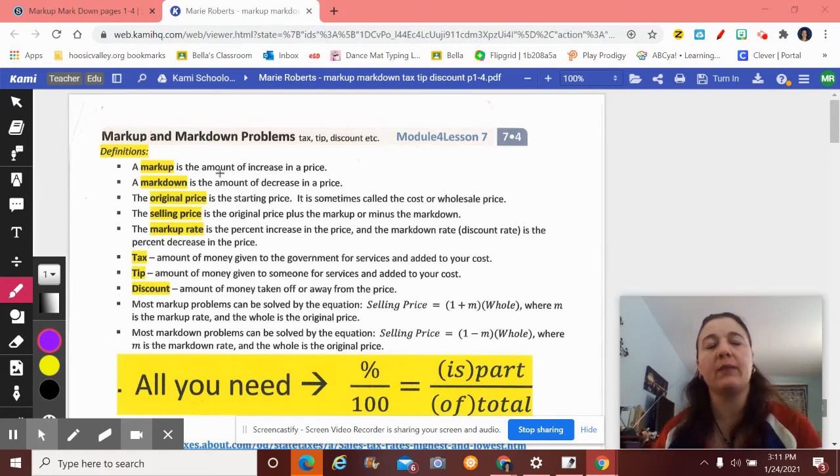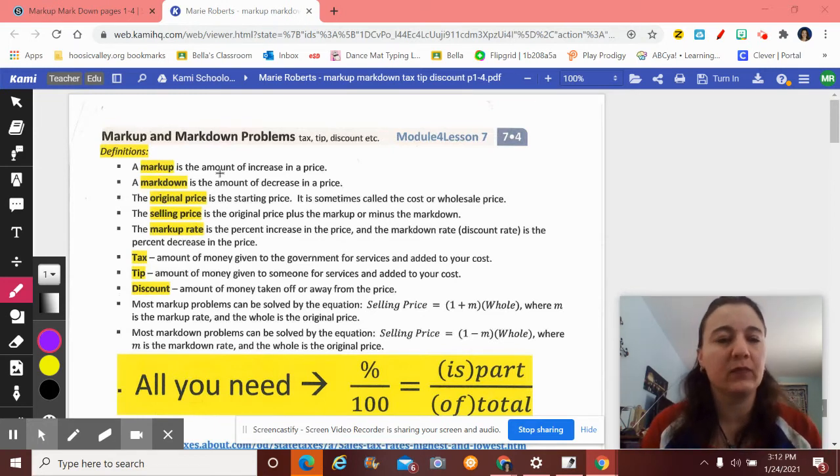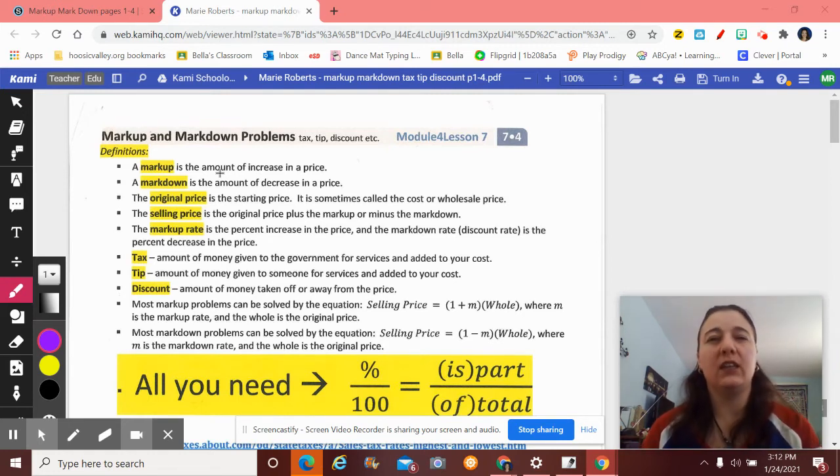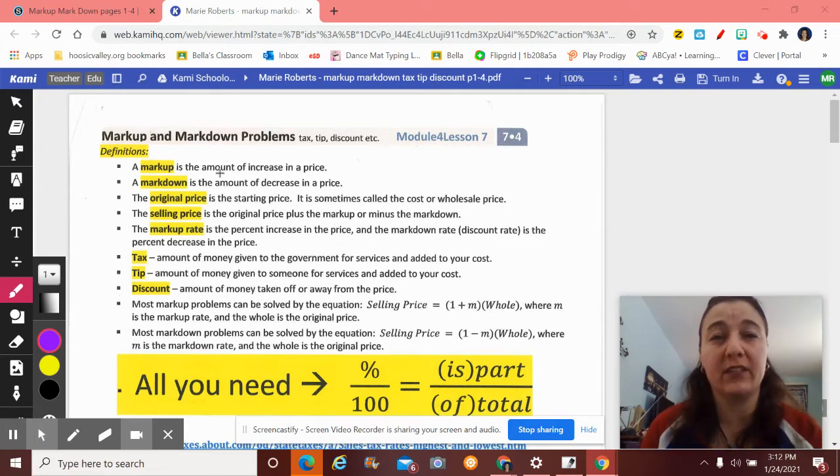The selling price normally happens after a markup or a markdown. The markup rate, anytime I say rate, we're talking about the percent. Tax is money given to the government. And not every place is taxed the same. Different states have different tax rates. You will find that New York and California are very highly taxed. That's probably why so many people flee to Florida when they get older.